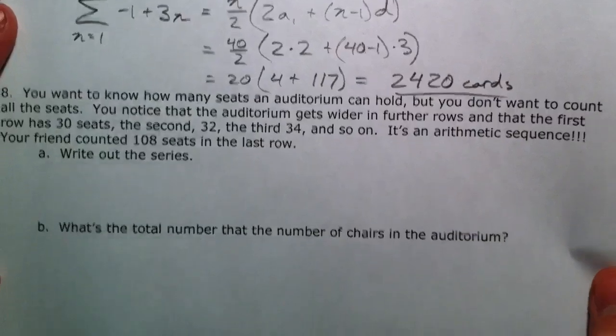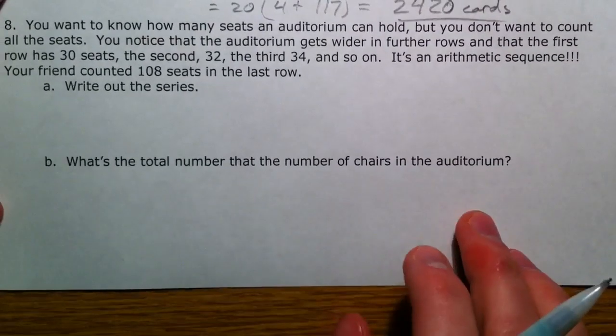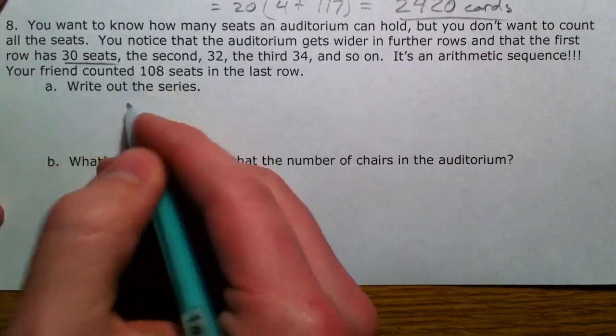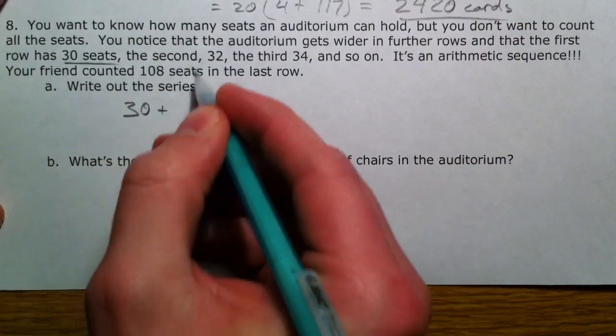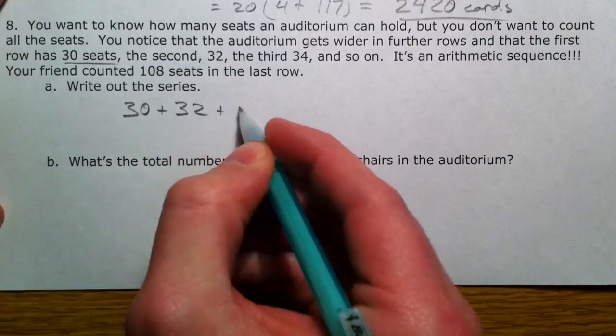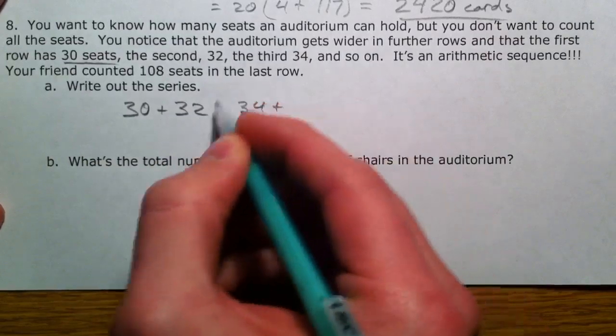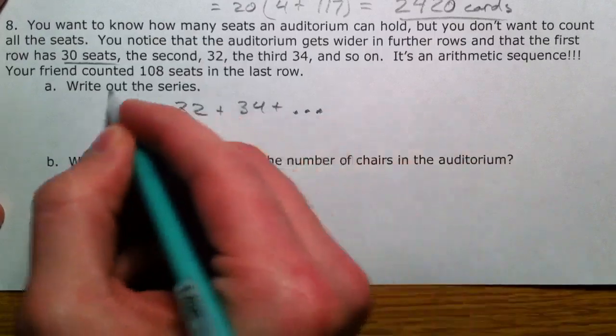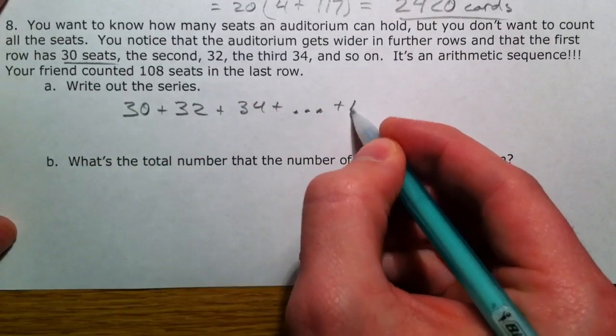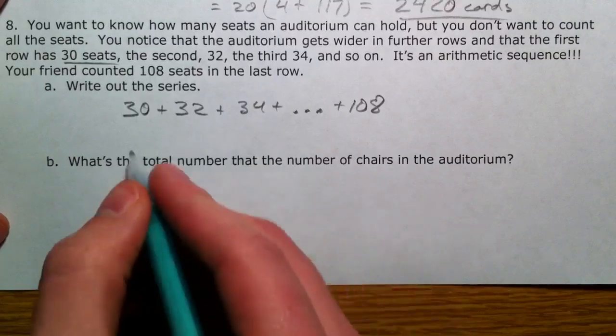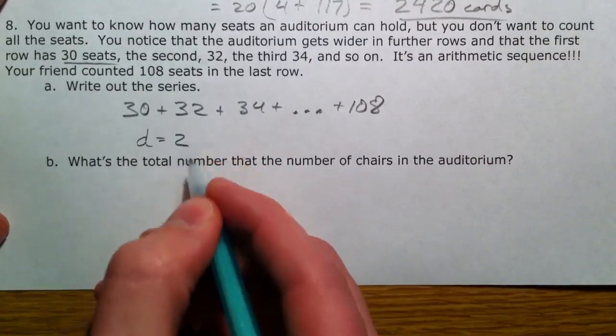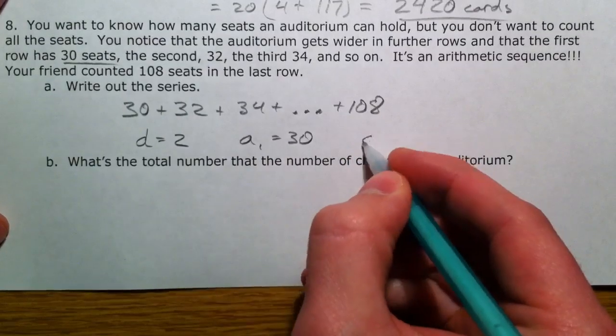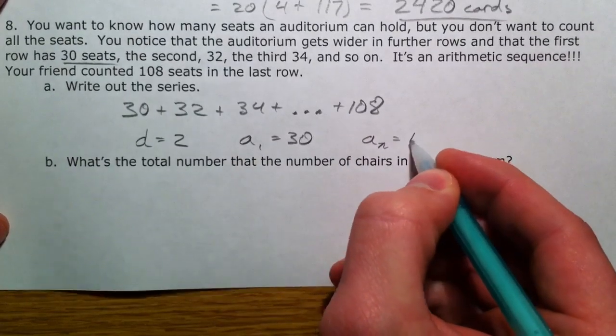The same kind of deal though. So, we're counting seats in an auditorium, but we don't want to actually count them all. So, the first row has 30, second row is 32, 34, so on. You notice that they're adding 2 each time. And then your friends at the back, and they notice that there's 108 seats. So, we notice our common difference is 2, our first term is 30, and our last term, a sub n, is 108.